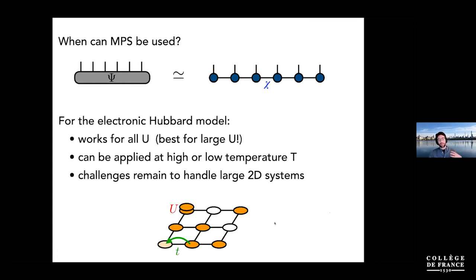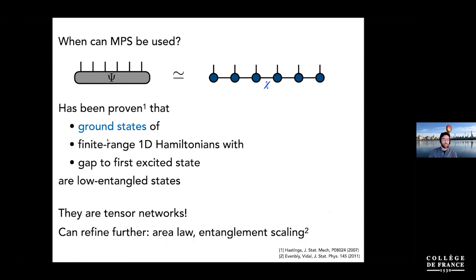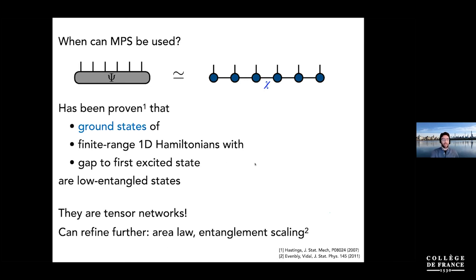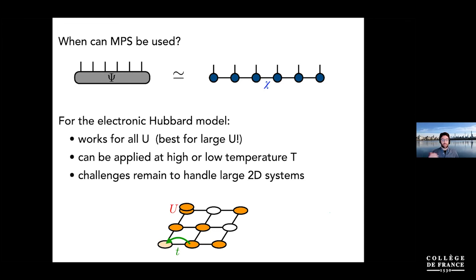This means that tensor networks can be applied to the Hubbard model at least in the ground state, and I'll describe how to go beyond to finite temperature. This is a very general statement — there's nothing about strength of interactions here. It turns out it works for all values of U, and actually best for large U. There are remaining challenges for dynamical properties and higher-dimensional systems. In 2D, things are still working well, but that's still a big frontier — the matrix product state story is rather 1D in nature, and extensions called PEPs that are truly 2D exist but their computational costs remain high.